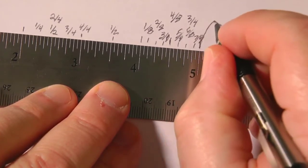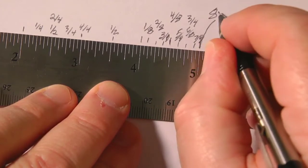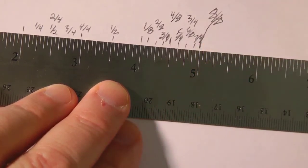And then here we have seven eighths. And then, of course, down here, we have the eight over eight, which, of course, equals one.